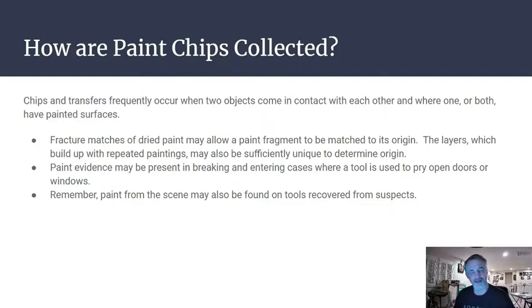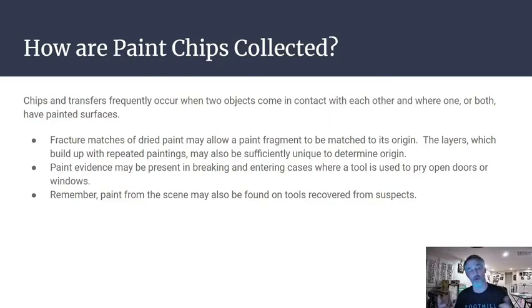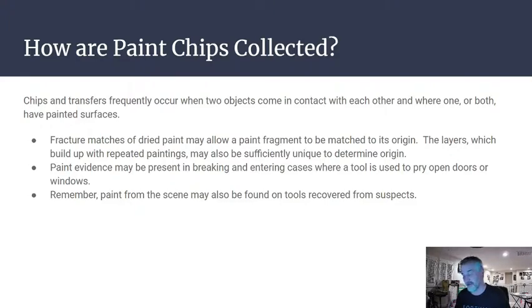Paint chips transfer frequently when two objects with painted surfaces contact each other. Fracture matches of dried paint can be used to match specific chips. Multiple layers of paint — if a surface has been painted four or five times — are very unique and can help determine origin. Paint evidence is common in breaking-and-entering cases where a tool is used to pry open a door or window. Paint from the scene may also be found on tools recovered from a suspect — transfer can go from house to tool or tool to house.